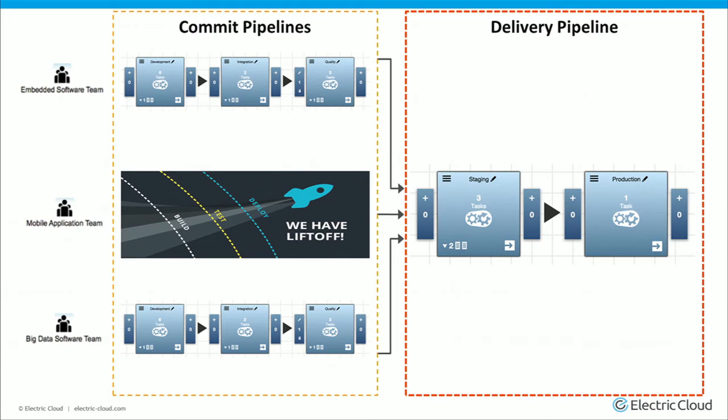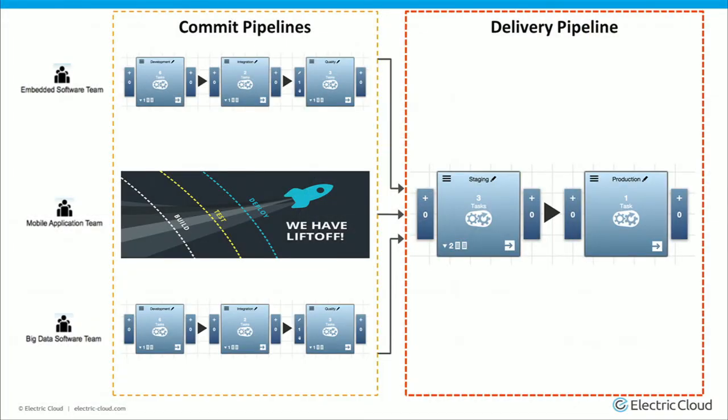Each team has its own pipeline from committing source all the way to publishing to an artifact repository or app store. They have their three pipelines, and at the end you bring them together, stage it, and deploy to production. I ripped this out of a longer product-focused demo, so I'm going to veer now a little bit into how we set up the demo environment, as opposed to being a product pitch.